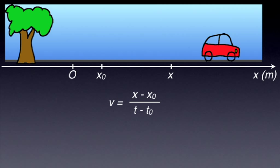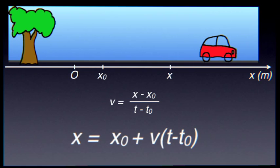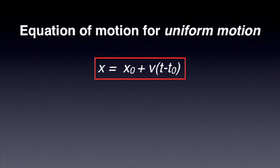By rearranging the equation, we get x equals x0 plus v multiplied by t minus t0. If v is known and the initial position of the car is known, so x0 and t0 are known, then the equation gives us the position x of the car at any moment in time. This is the equation of motion for uniform motion. So in general, if the velocity and the initial conditions are known, this equation gives us the position of the moving object as a function of time and allows us to calculate that position at any point in time.